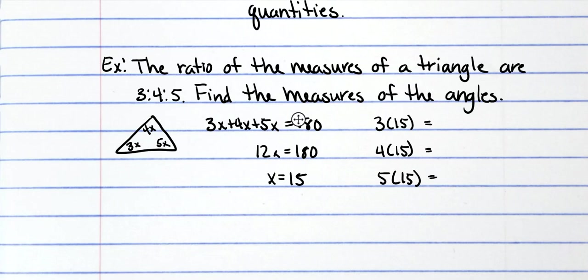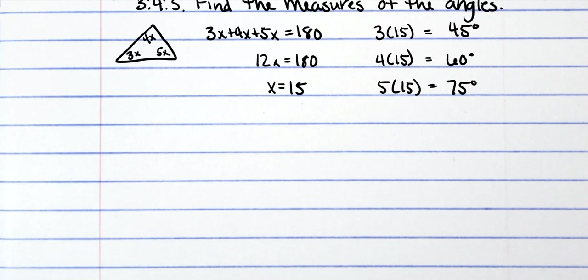So three times 15 is 45 degrees, the other one is 60 degrees, and then the last one is 75 degrees. Alright, then we need to define proportion. A proportion is an equation stating that two ratios are equal.